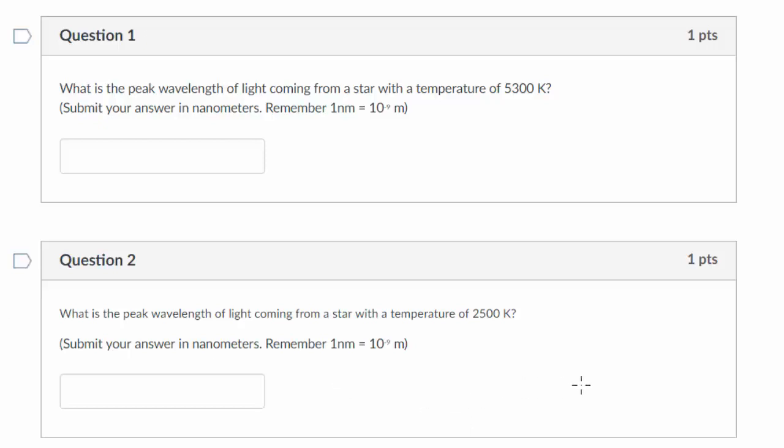All right, let's take a look at these practice problems related to black body radiation. The equation that's going to be relevant for most of these questions is that the peak wavelength, lambda max, is given by 0.0029 divided by the temperature in Kelvin.